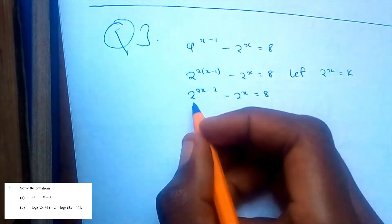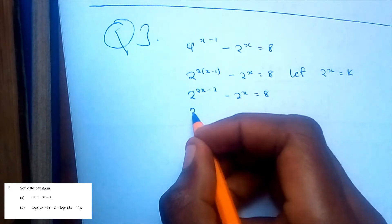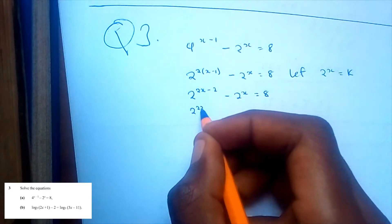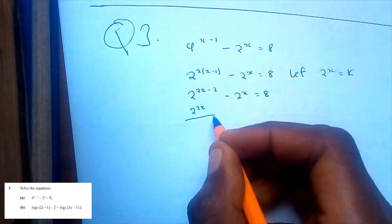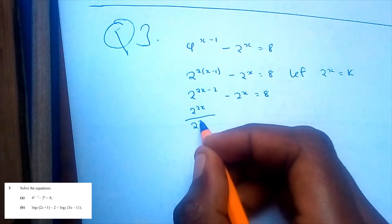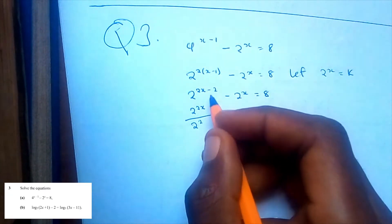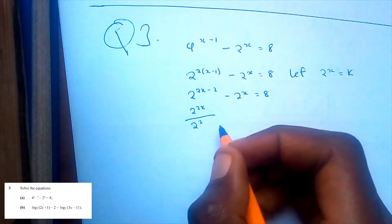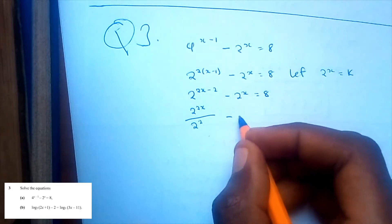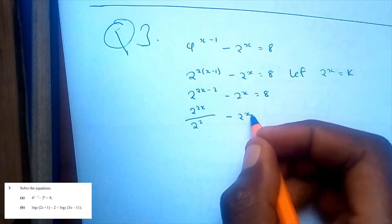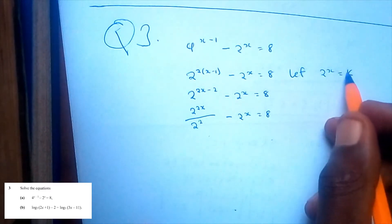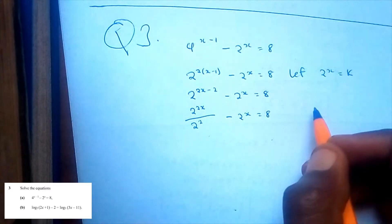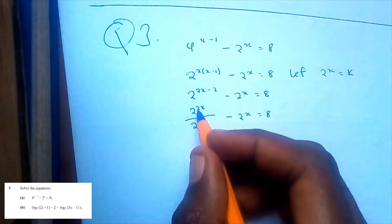This is just the same as 2 to the power 2x over 2 to the power 2, since it's subtracting, so it's over 2 to the power 2. Then minus 2 to the power x is equal to 8. Then we let 2 to the power x be equal to k.